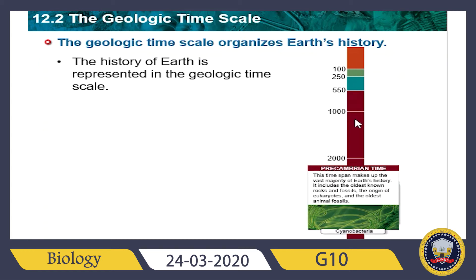The time scale is divided into a series of units based on the order in which different groups of rocks and fossils were formed. The geologic time scale consists of three basic units of time: the eras, the periods, and something we call epochs.